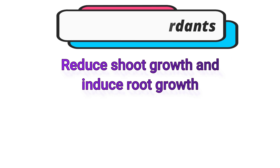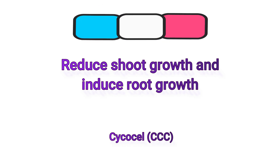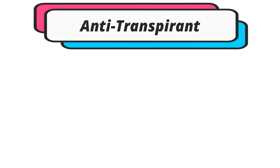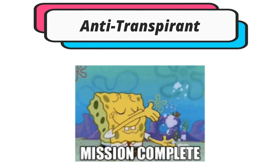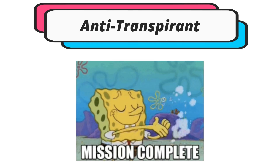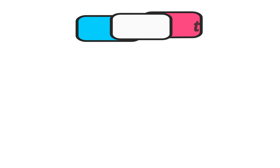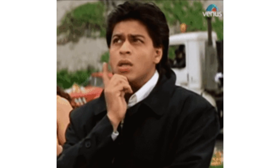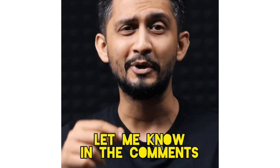An example of growth retardants is cycocel, also known as CCC. In this video we have discussed about antitranspirants, which reduce evapotranspiration. Mulches and windbreaks are also methods to reduce evapotranspiration — if you want to know more about those, let me know in the comment box.